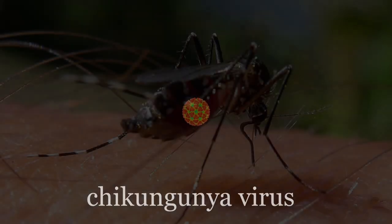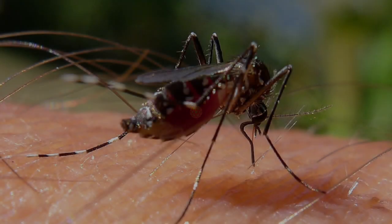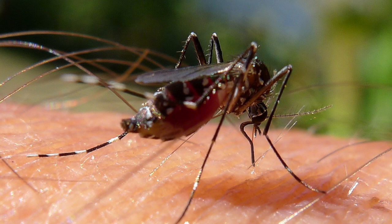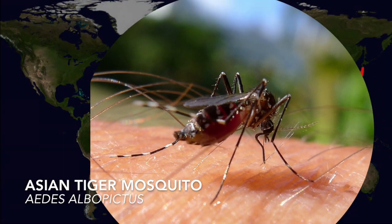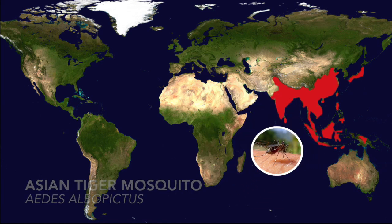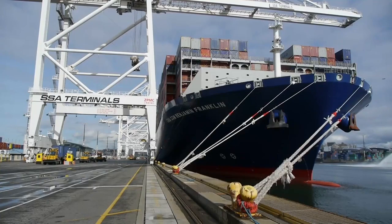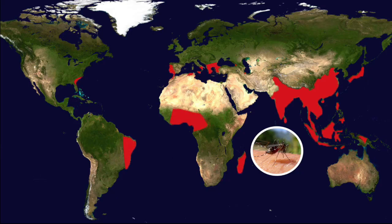Chikungunya is caused by a virus transmitted by mosquitoes. One mosquito that spreads the chikungunya virus is the Asian tiger mosquito, known by the scientific name Aedes albopictus. It has traveled the globe from its native home in Asia by hitching rides on cargo ships. The Asian tiger mosquito has been introduced to every continent except Antarctica, setting the stage for diseases like chikungunya to spread.